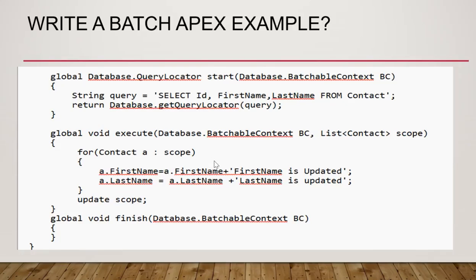To write a Batch Apex example, you first create a class which implements the Database.Batchable interface. Within that, you'll have to add three methods: start, which contains the batchable context parameter, where you provide the query you want to work with; execute, which accepts a scope list parameter and does the processing, update, delete, or any operations; and finish. The execute method divides records into 200 per batch.